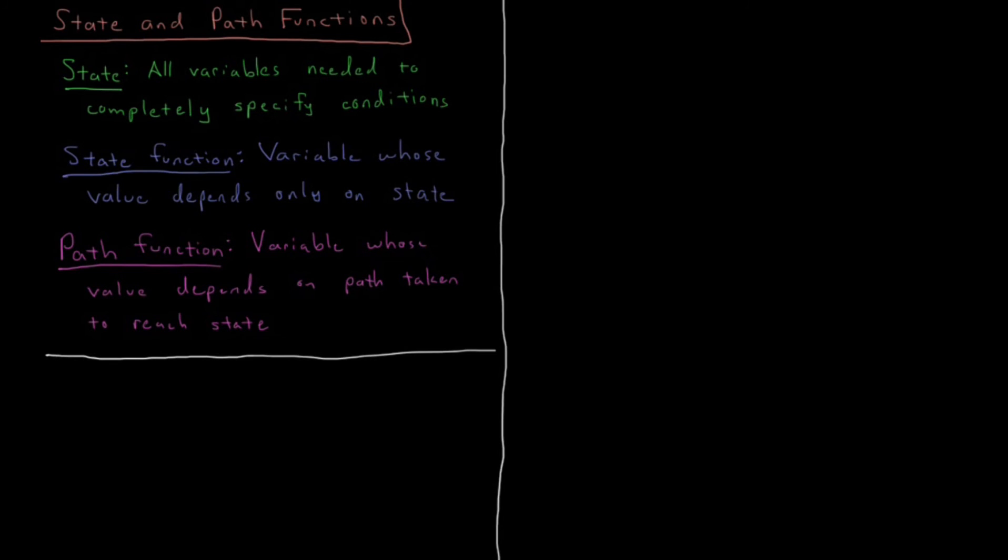In this video we're going to look at state functions and path functions. A state is all the variables needed to completely specify the conditions for a system. If I know all the variables to specify a state, then I can calculate any other property of that state that I'm interested in. For example,